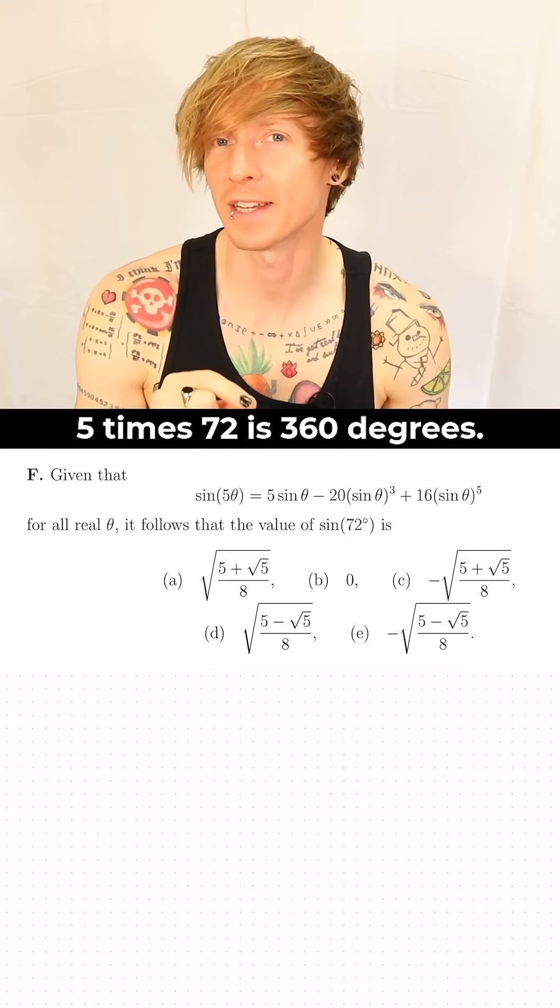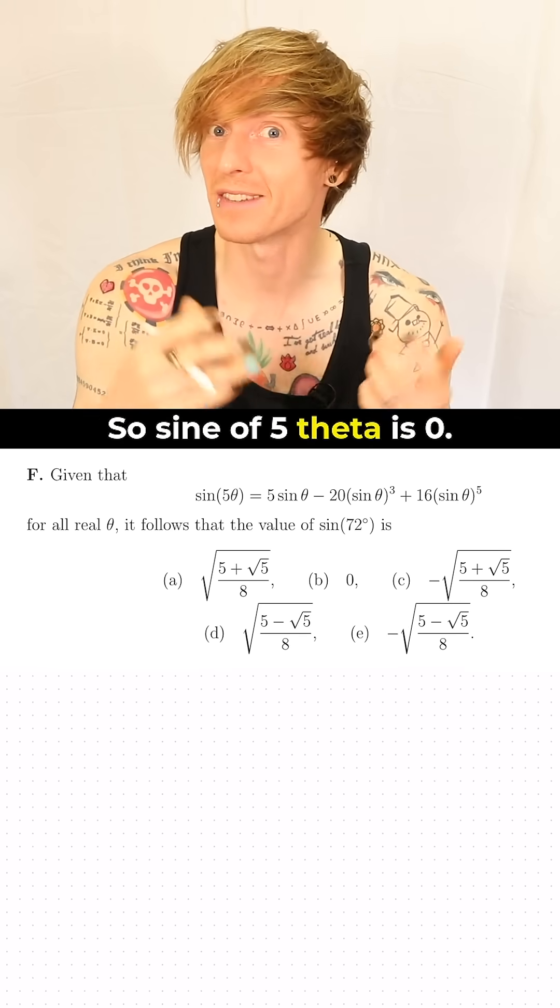First thing to spot here is that 5 times 72 is 360 degrees, so sine of 5 theta is zero.